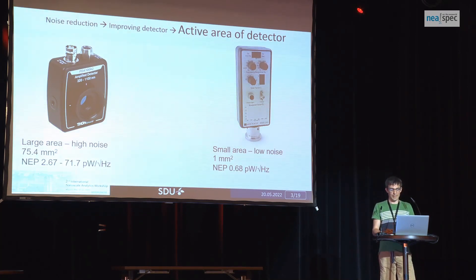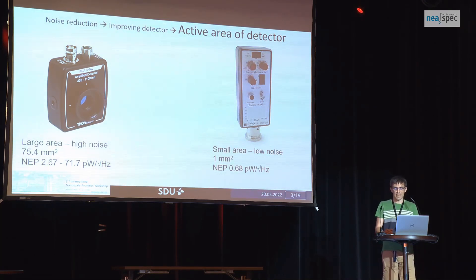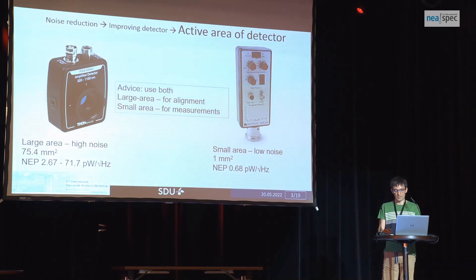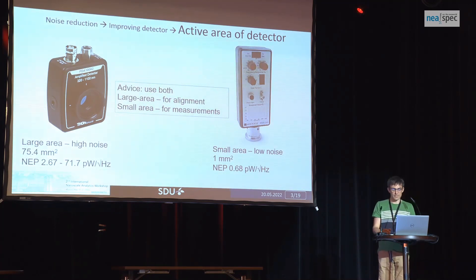So which one to buy? Detectors differ by the area of detection. There are large area detectors, but they have large noise. And small area detectors, which have small noise. My advice is, instead of choosing one detector, use both: use a large area detector for alignment and a small area detector for measurements. The noise difference is actually substantial — by a factor of 5 to 10. You can really reduce the noise from the detector this way.